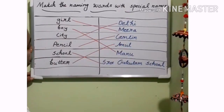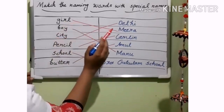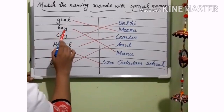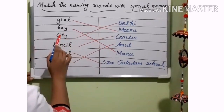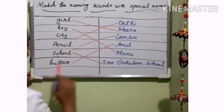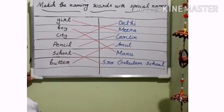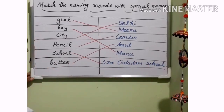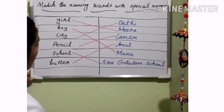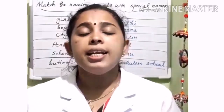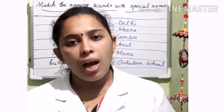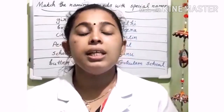These special names we can call proper nouns. Girl is a noun — what's the special name of girl here? Meera. And next, boy — what's the special name of boy? Manu. And third, city — what's the special name of city? Jalhi. And fourth, pencil — what's the special name of pencil? Camlin. And next, school — what's the special name of school? Sri Gokulam School. Then butter — what's the special name of butter? Amul. So, I hope you understood this. Noun means each and every person, place, animal, or thing around us — it has a name, that we can call naming words or nouns. When we are giving a special name to these things, it will be a proper noun.